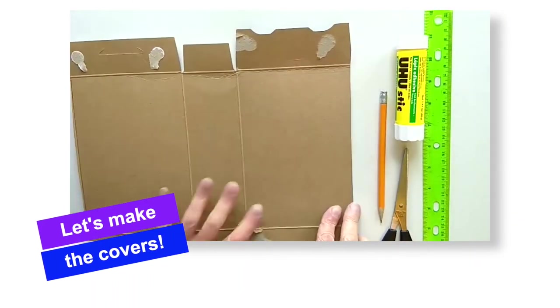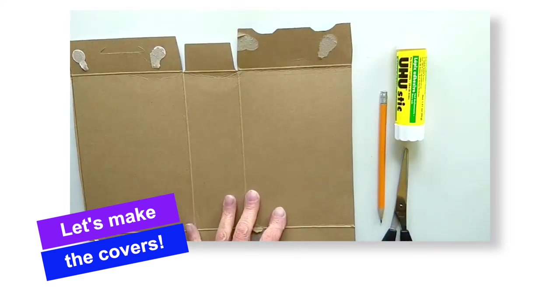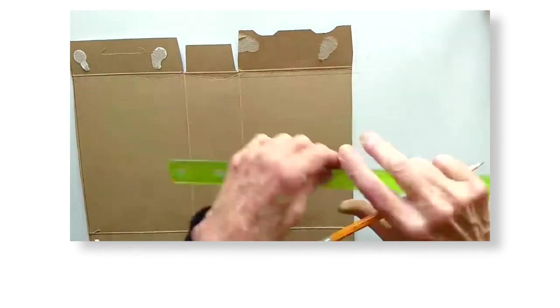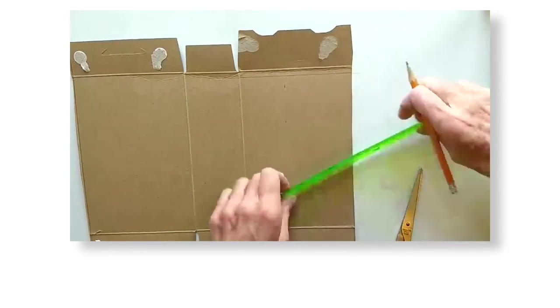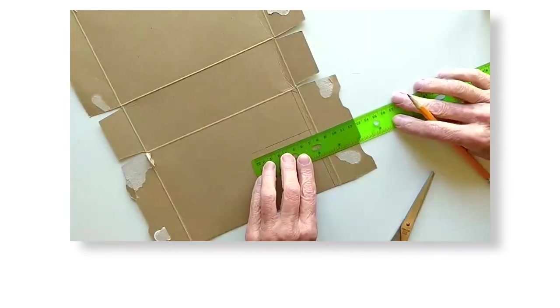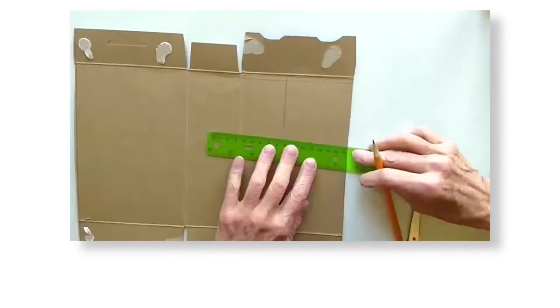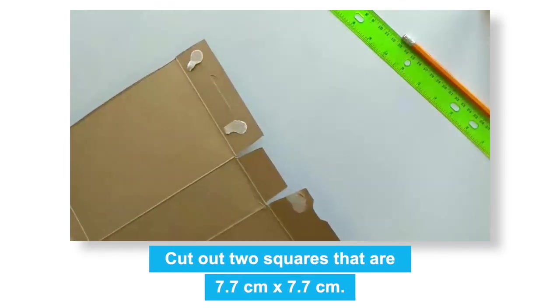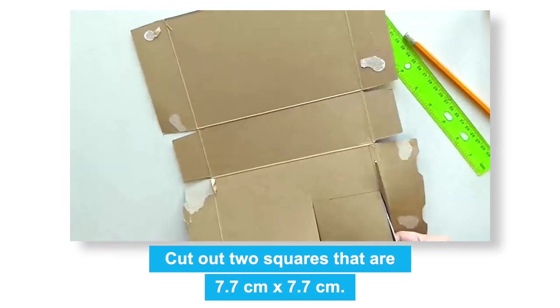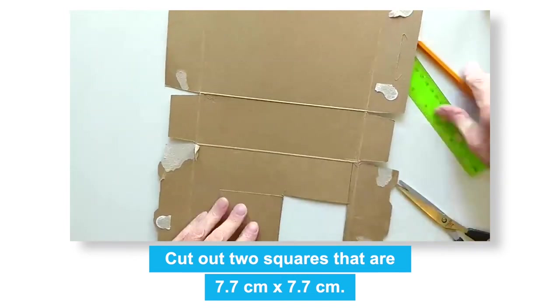We'll be using cardboard for the inside of the covers for your accordion book. You can usually find exactly what you need in the recycle bin. I'm using an empty cracker box. From the cardboard we're going to cut out two squares that are 7.7 centimeters by 7.7 centimeters.